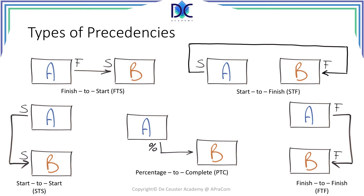Although we will only work with the finish-to-start relationship in this course, I will also define the other relationships. The second one is the start-to-start relationship: task B can only start when task A started. A finish-to-finish relationship means that task B can only finish when task A is finished. A start-to-finish means that task B can only finish when activity A starts. For the sake of this course and some practical applications, I also added a percentage-to-complete relationship.